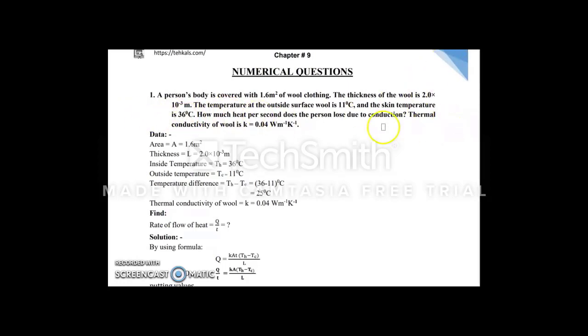Numerical number 1: A person's body is covered with 1.6 meter square of wool clothing. We are given the area. The thickness of the wool is 2 times 10 to the power minus 3 meters. Temperature outside the wool, that is the surrounding temperature, is 11 degrees centigrade. Inside temperature, the skin or body temperature, is 30 degrees centigrade. Then we have the constant. We are asked how much heat the person will lose. Thermal conductivity, conduction - how much heat is lost.